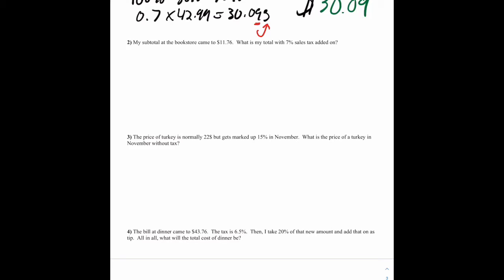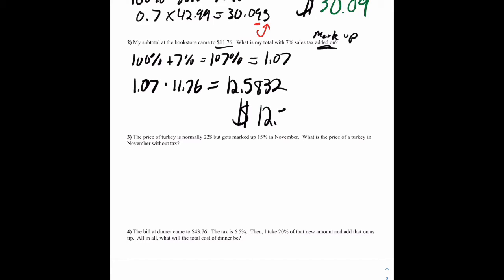Subtotal at the bookstore came to $11.76. Subtotal means before the full total. And there's a 7% sales tax added on. So this is going to be a markup. So we're going to add that tax to 100%. So 100% plus 7% equals 107%. As a decimal, that equals 1.07. So we're going to do 1.07 times 11.76, and get our answer of 12.5832, which rounded to the nearest cent, this is 12.58.